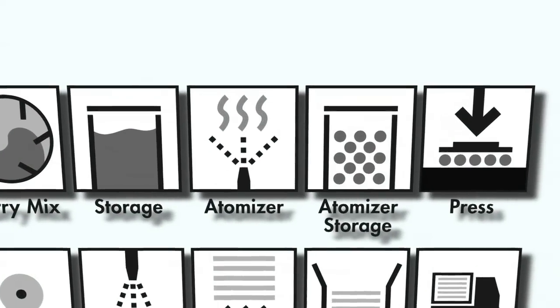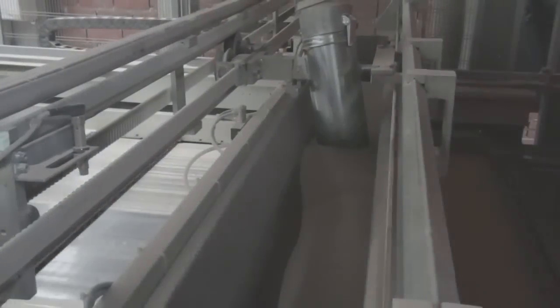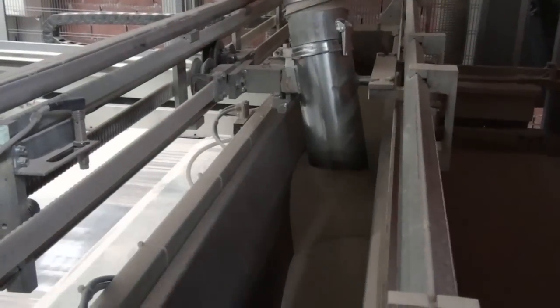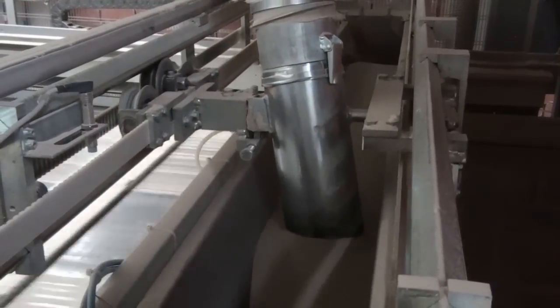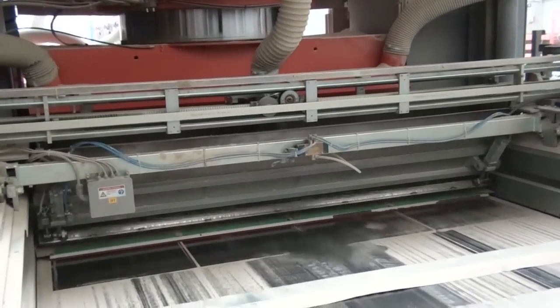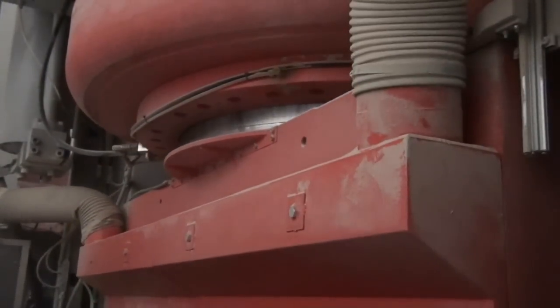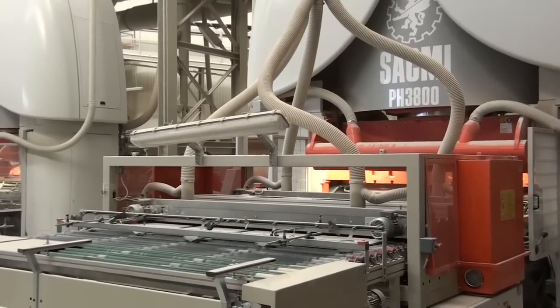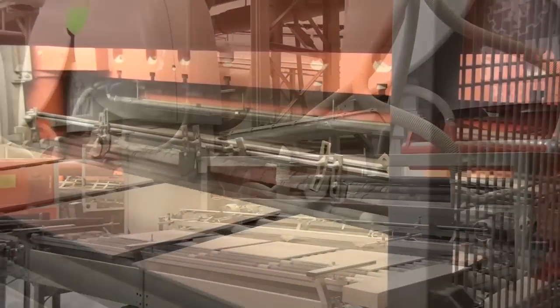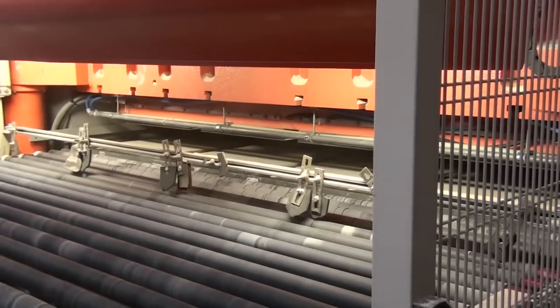The atomized powder is fed into a holding vat just behind the press. The vat releases measured quantities of atomized powder into a tray, which distributes the powder evenly into the mold. A force of 340 to 400 kilograms per square centimeter is applied using a large hydraulic press. The combination of high pressure and residual moisture turns the powder into a solid mass.